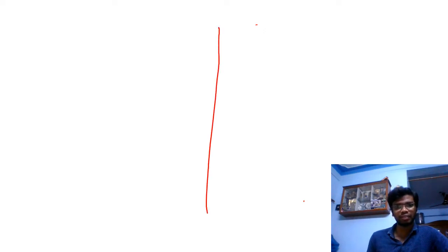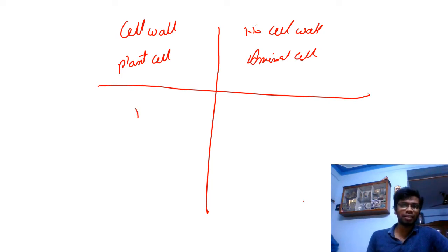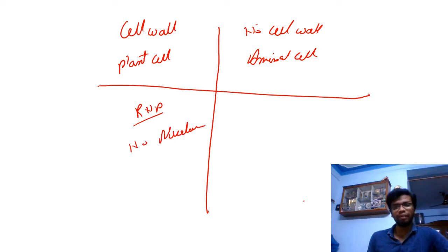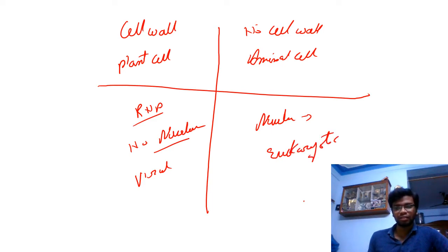The major basic difference — according to lower levels of education — is that cells are divided into two types based on the cell wall. If a cell has a cell wall, we call it a plant cell; if it has no cell wall, we call it an animal cell. Based on genetic matter, if the cell has only RNA and no nucleus or a very primitive form of nucleus, we call it a viral cell. If it has an established nucleus, we call it a eukaryotic cell.